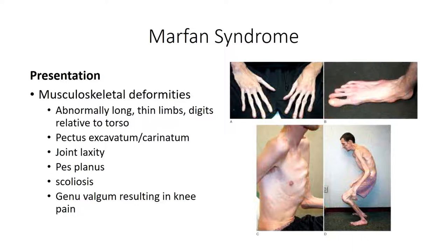Loss of elasticity leads to excessive stretching in connective tissues where elastin is typically expressed in high quantities. Musculoskeletal deformities include abnormally long and thin limbs and digits, a pigeon-chested appearance, joint laxity, flat feet, scoliosis, and knock knees.